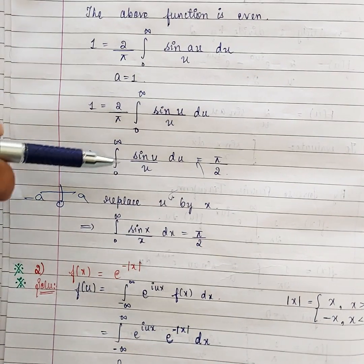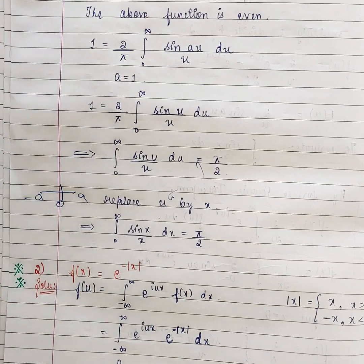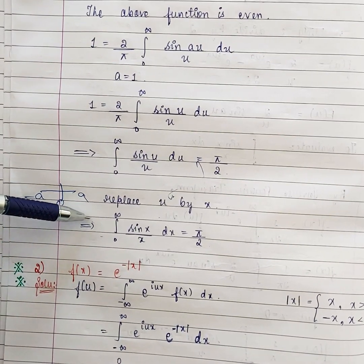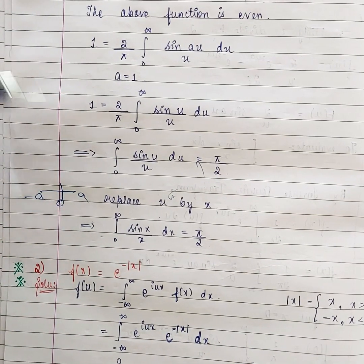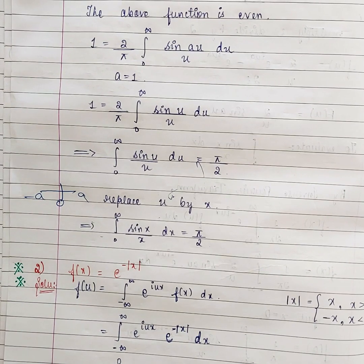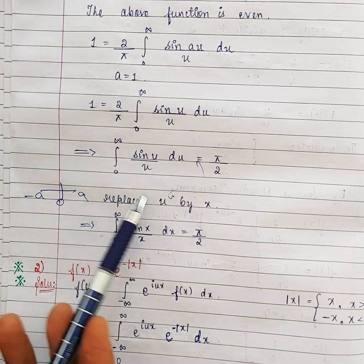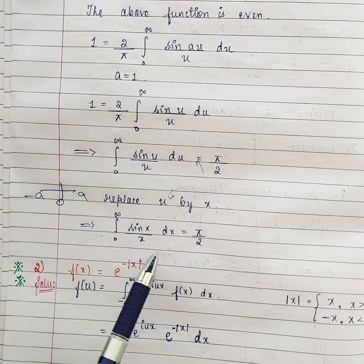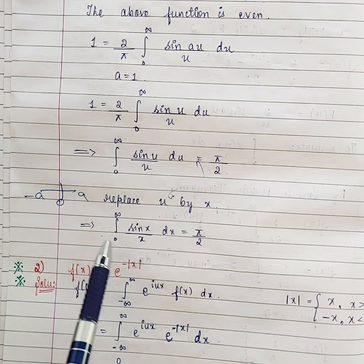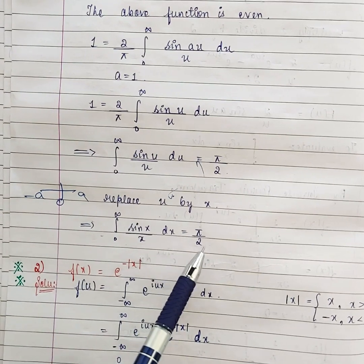Finally, replacing u by x, the integral from 0 to infinity of sin(x)/x dx = π/2. Notice we never actually integrated in the inverse Fourier transform step — we only used the formula. The integration was only done in the first half when finding the Fourier transform. This result, that the integral from 0 to infinity of sin(x)/x dx equals π/2, is a classic result that also appears in aptitude questions. We will see one more problem in the next video.